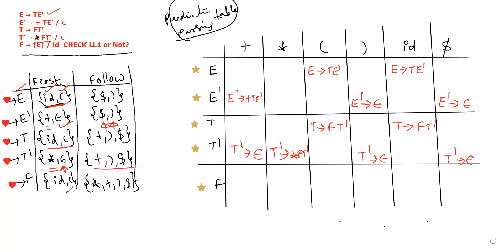Next is F. F: for id, F tends to id. For open bracket, F tends to open bracket E close bracket. Both are inserted into the table.